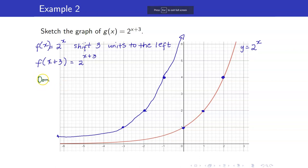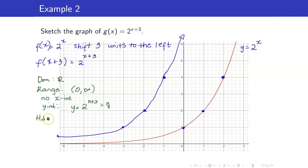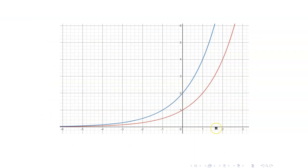What would be some of the properties? The domain is always the set of real numbers — for exponential functions, you have no restrictions. For the range, you just shifted everything to the left, so the horizontal asymptote does not change; the range is still 0 to infinity. You have no x-intercept because you just moved everything to the left. For the y-intercept, set x to 0: 2 raised to 0 plus 3 is 8. Your horizontal asymptote is still y equals 0. The horizontal asymptote only moves if you shift the graph up or down.